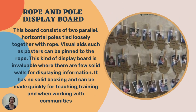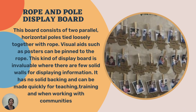Next, we have the rope and pole display board. This board consists of two parallel horizontal poles tied loosely together with rope. Visual aids such as posters can be pinned to the rope. This kind of display board is invaluable where there are few solid walls for displaying information. It has no solid backing and can be made quickly for teaching, training, and when working with communities.